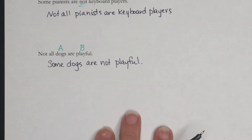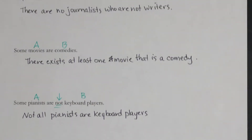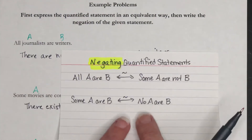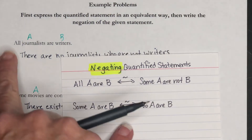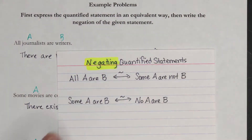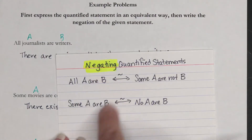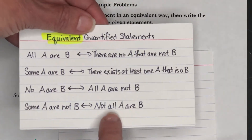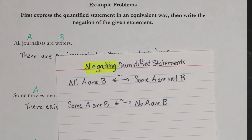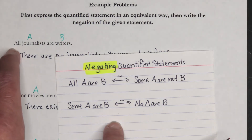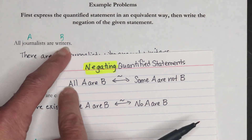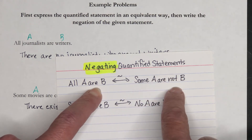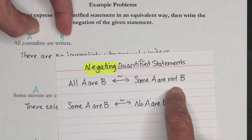Now we're going to go through and do negations. Remember, we're looking for exactly the opposite truth value — and again, it is pattern matching. We may need to use an equivalent statement first since some problems are written with the right-hand side. For 'All journalists are writers' — pattern: All A are B — the negation is: Some A are not B. So: some journalists are not writers.